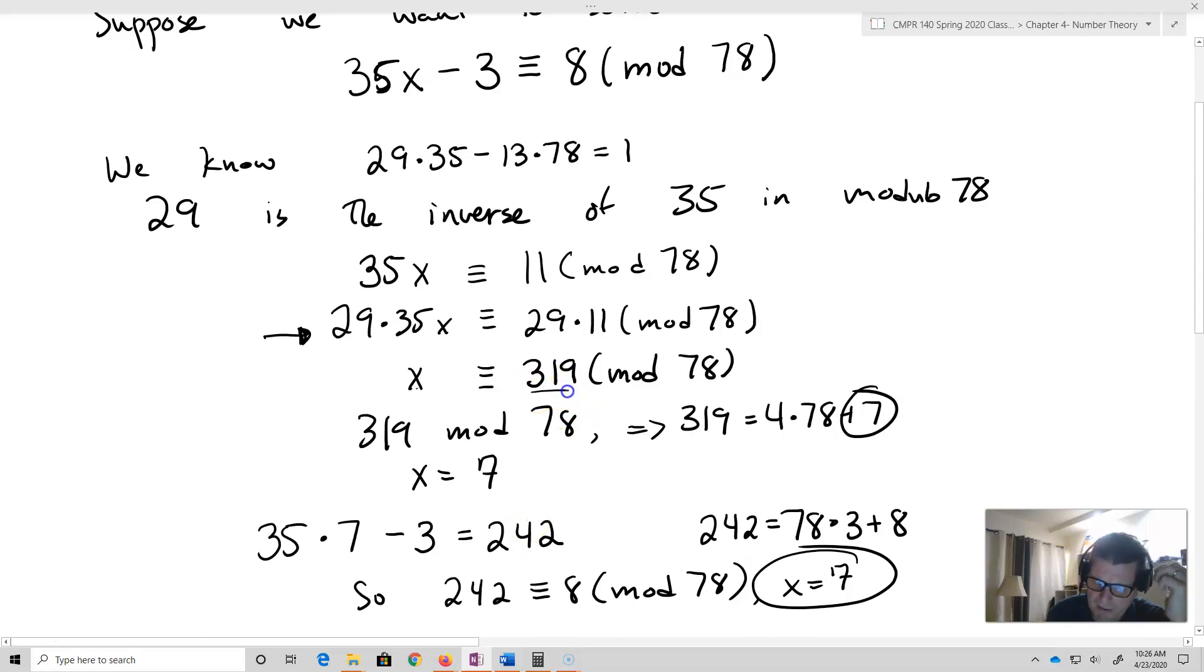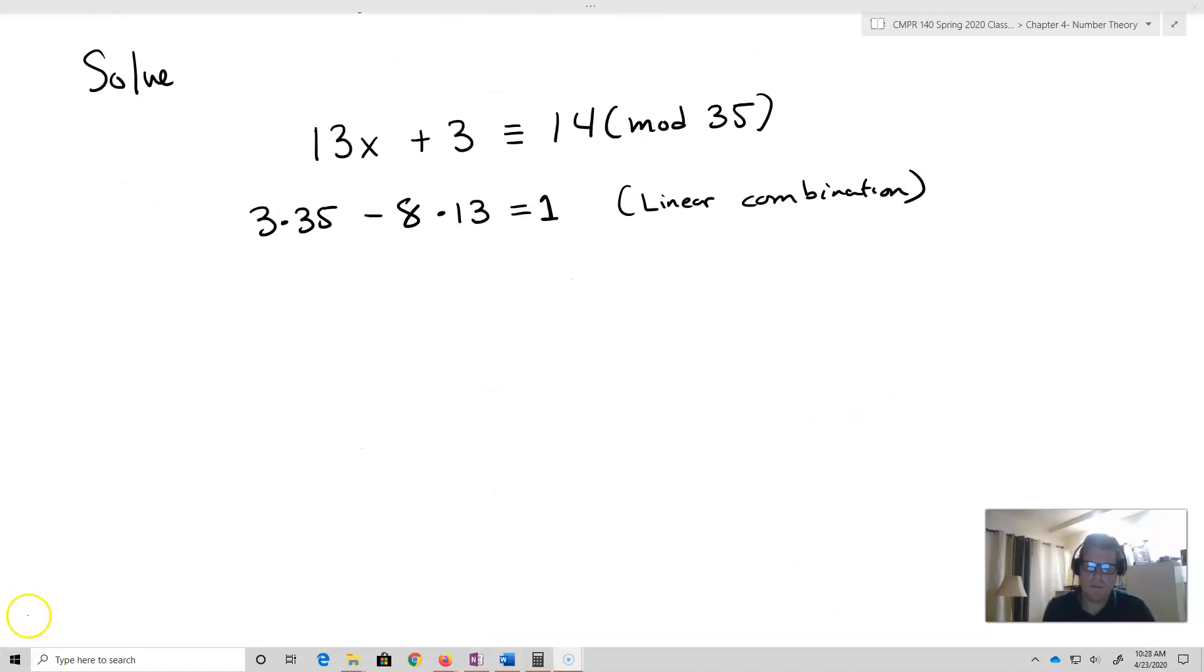And that gave me this equivalence. Multiply both sides by that inverse. And so I'm left with this value mod 78. So I want to go in and simplify that using modular arithmetic. So 319 ended up being seven because that's the remainder. It's equivalent to seven. So x equals seven. And I can check just by simply plugging it in. 35 times seven minus three, that's 242. And what we see is that that is going to end up being equivalent to 8 mod 78.